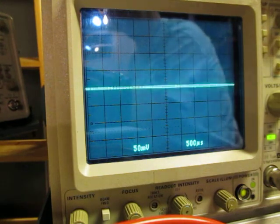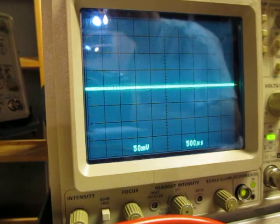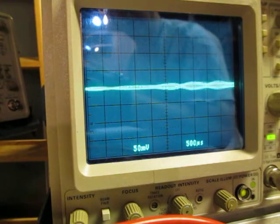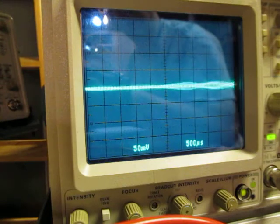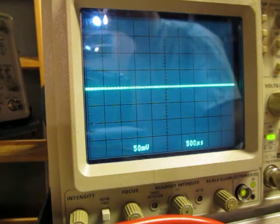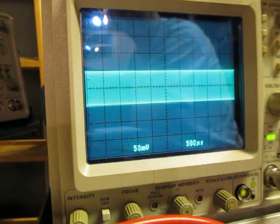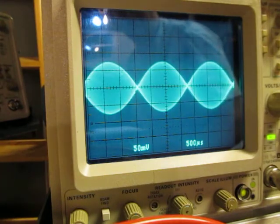Now what will happen when I turn both of these on is they're going to beat against each other. Basically they'll periodically constructively and destructively add up and create a beat pattern. The beat pattern will have a frequency equal to the frequency difference between the two tones. So we turn on one tone and then the other, there's our beat pattern, and that's exactly what you're looking for.